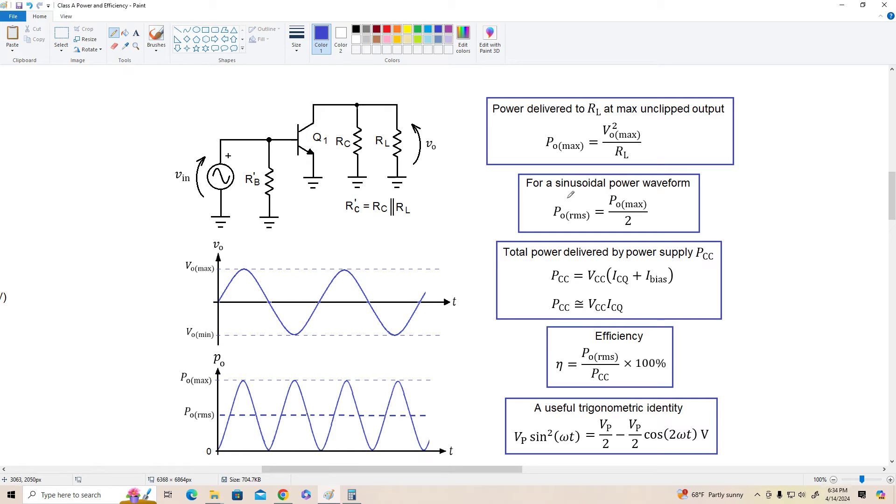Now for a sinusoidal power waveform the RMS value is simply the max value divided by two. The reason for that we can show is power RMS is equal to V RMS times I RMS, and we know that RMS voltage is VP times 0.707 or equivalently VP over the square root of two, and likewise the RMS current is the peak current divided by the square root of two. So when we multiply these out we have VP times IP, that's the peak power divided by the square root of two times the square root of two which is two. So the RMS power is equal to peak power divided by two as we have here.